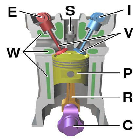A reciprocating engine, also often known as a piston engine, is typically a heat engine that uses one or more reciprocating pistons to convert pressure into a rotating motion. This article describes the common features of all types.